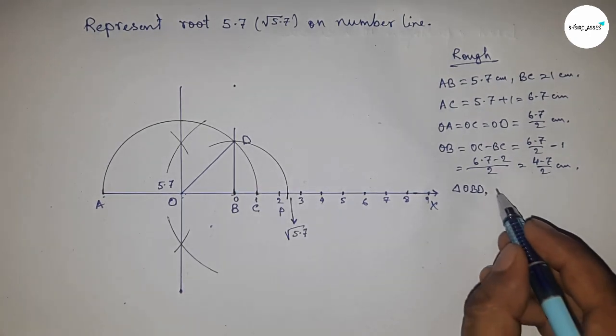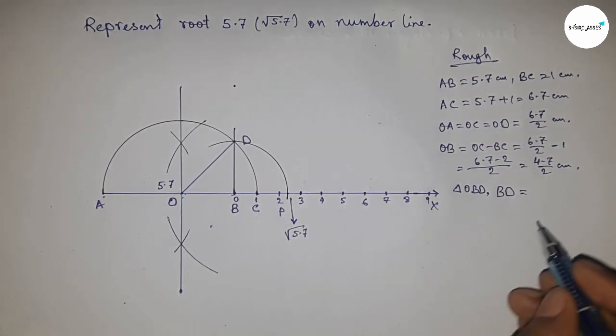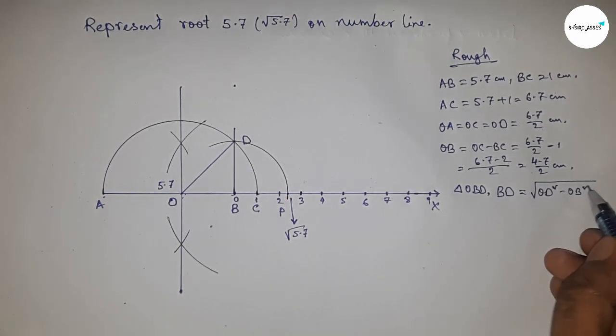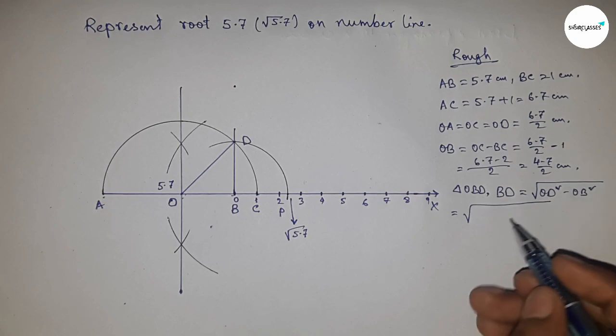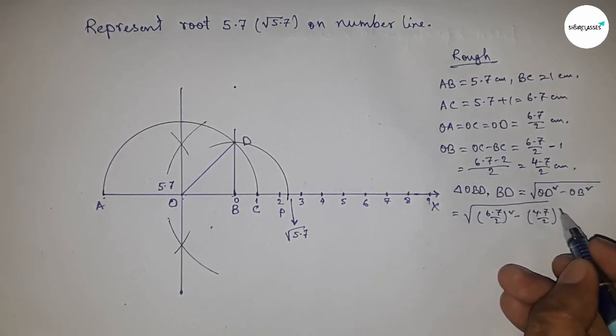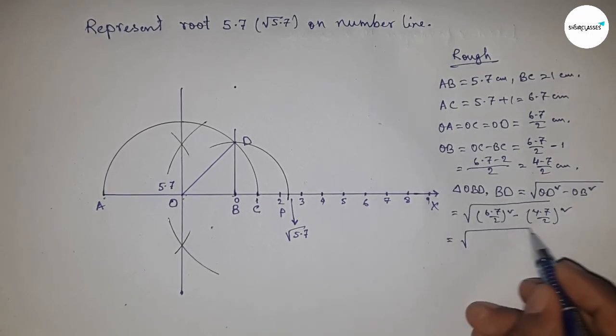BD equals root over OD squared minus OB squared. Now, putting the values of OD and OB, I'm going to use the formula a squared minus b squared equals (a plus b)(a minus b). Applying the formula here.